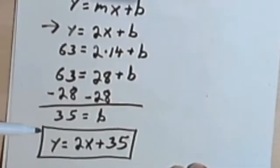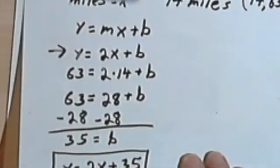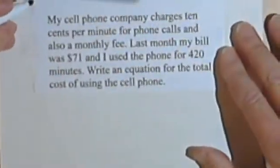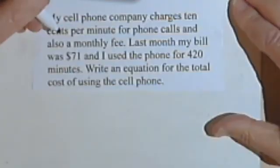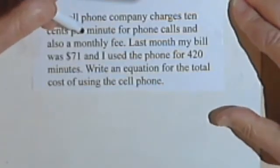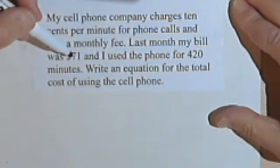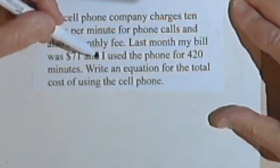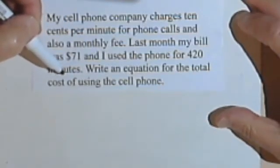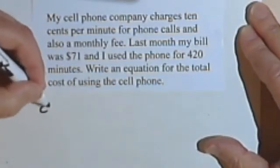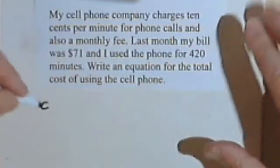Okay, let's do another one, and let's do this one with the point slope form. Okay, so here we have my cell phone company charges 10 cents per minute for phone calls and also a monthly fee. Okay, so we don't know what the monthly fee is. Last month my bill was $71 and I used the phone for 421 minutes. That's also kind of expensive. Okay, at any rate, so what I'm looking for... It says write an equation for the total cost of using a cell phone.